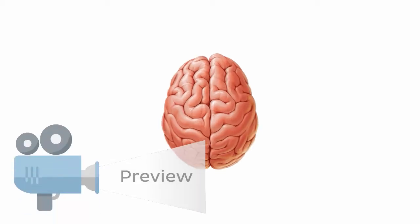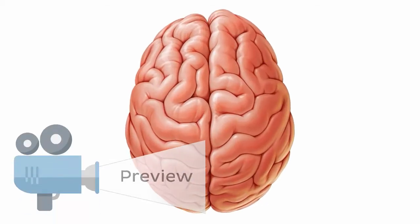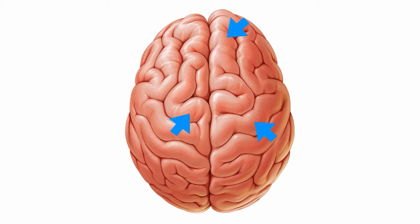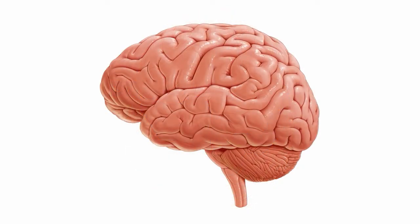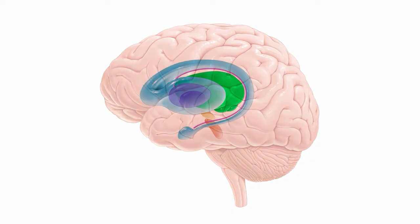When we think of learning the gross anatomy of the brain, the first thing that comes to mind are the humps and bumps of the cerebral cortex. We know these as the sulci and gyri, of course. But what about the deeper structures of the brain that lie within and beneath the cerebral cortex — those not visible without some kind of dissection?